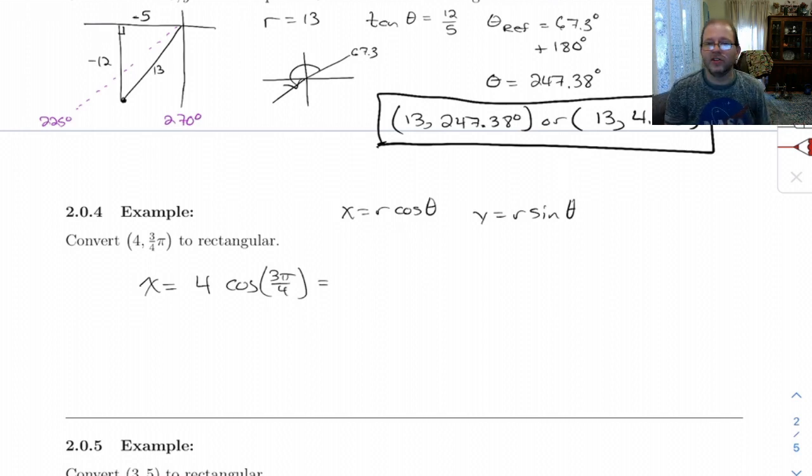Cosine 3 pi over 4. I mean, I know it's going to be root 2 over 2. It's either going to be positive or negative. And now that I take a moment to even think about it, cosine is going to be negative in this quadrant. So it's going to be 4 times negative root 2 over 2. So that's negative 2 root 2.